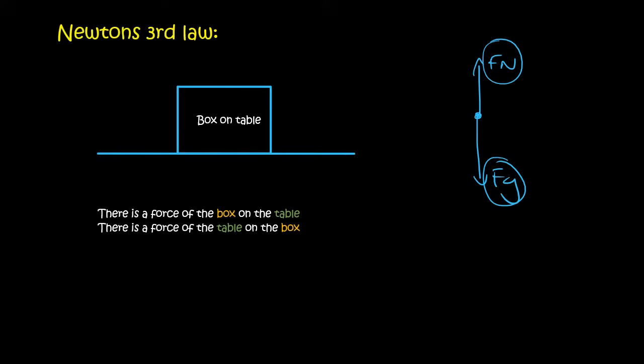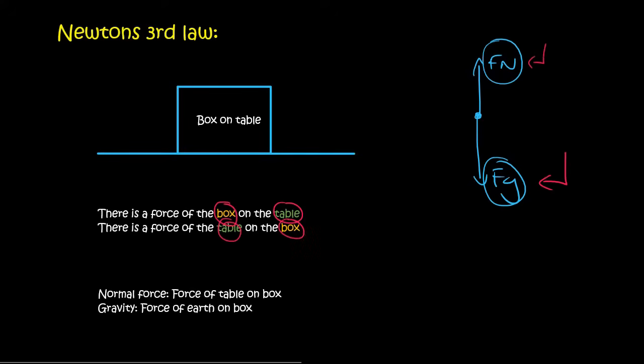With Newton's third law, you want to have two sentences where the words can be switched. For example, gravity and normal force do not work. Normal force is the force of the table on the box, and gravity is the force of earth on the box, so the words have not been switched. If the words can be switched, then it's Newton's third law.